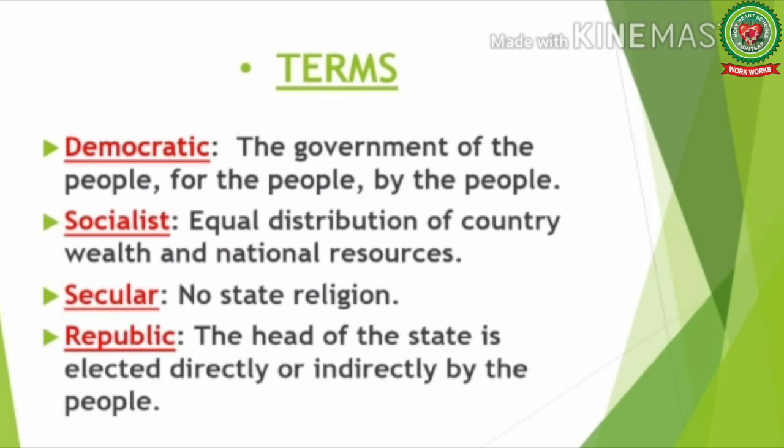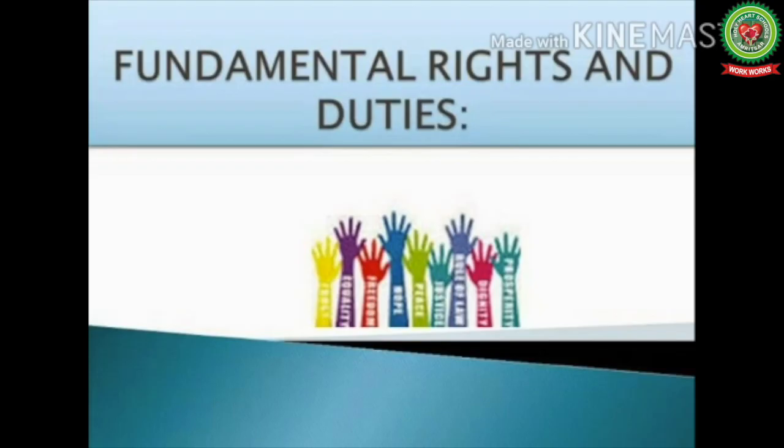Number five — Democratic: government of the people, for the people, by the people. Number six — Socialist: equal distribution of the country's wealth and national resources. Number seven — Secular: no state religion. Number eight — Republic: the head of the state is elected directly or indirectly by the people.